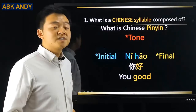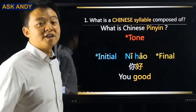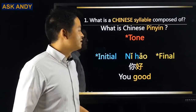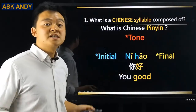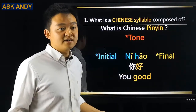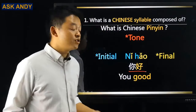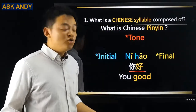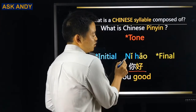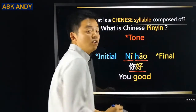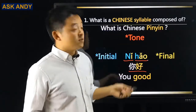For question number one: What is a Chinese syllable composed of? We must know the answer to this question first. What is Chinese pinyin? In China, the pronunciation system is known as the pinyin system. Pinyin means 'to spell' — yin is sound, so 'to spell sound.' In China, we write with characters, but you may not have a clue for the pronunciation, so we need pinyin to know the pronunciation.